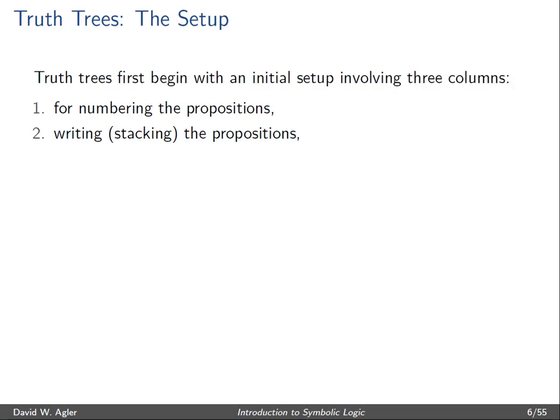The second column is for writing or stacking the propositions. These are where all the formulas are going to go in the truth tree. The third column, and this column is optional and won't necessarily be presented here, is for justifying each of the formulas or propositions. This column will indicate why a particular formula is on the line that it is.